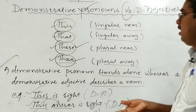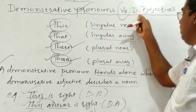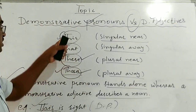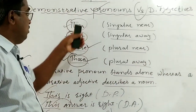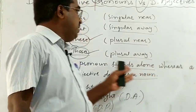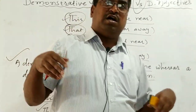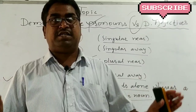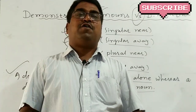I hope you learned and understood the topic — demonstrative pronouns versus demonstrative adjectives. It's simple: there are only four demonstrative words in English. Whenever these words are not followed by any other noun, they function as demonstrative pronouns. When they are followed by a noun or nouns, they function as demonstrative adjectives. That's it. Thank you so much for your patient watching. Have a knowledgeable day ahead.